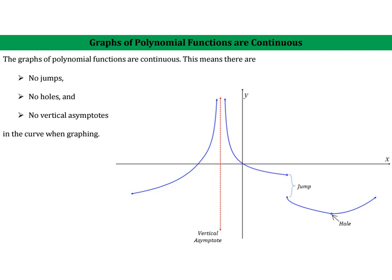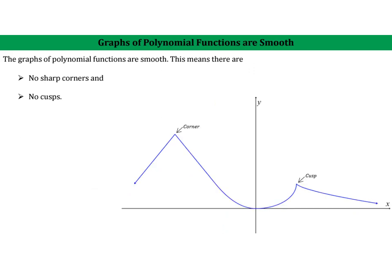Polynomial functions are also smooth. And what that means is whenever we graph, there are no sharp corners, no cusps, nothing like that. It's a nice smooth curve.